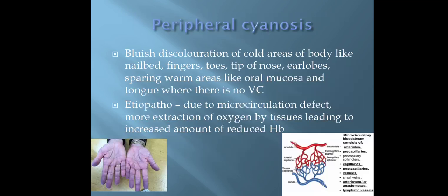Next, peripheral cyanosis. It is the bluish discoloration of cold areas of the body like nail bed, fingers, toes, tip of nose, and earlobes, and it spares the warm areas like oral mucosa and tongue where there is no vasoconstriction. The etiopathogenesis is due to microcirculation defect, with more extraction of oxygen by tissues leading to increased amount of reduced hemoglobin.